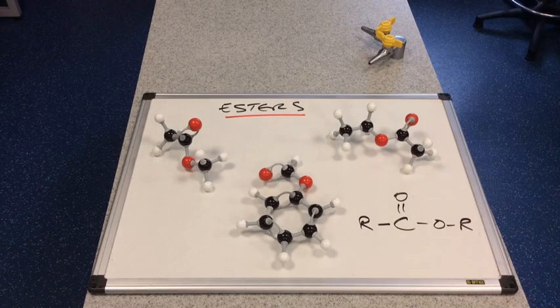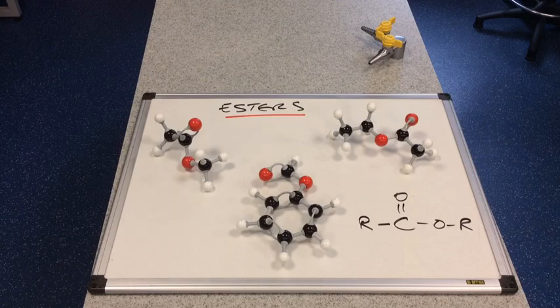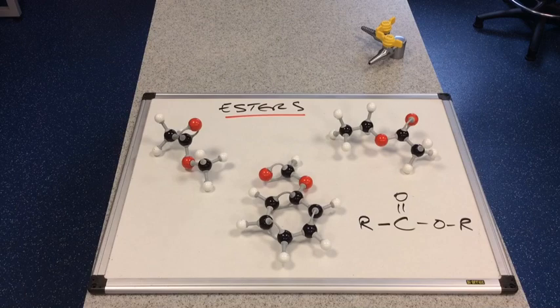In this video I'm going to look at esters. We'll start with naming some esters and then look at how to make them. I'll do a quick recap of AS knowledge — making esters from carboxylic acids and alcohols — and then take it into A2, making esters where we use something called an acid anhydride.